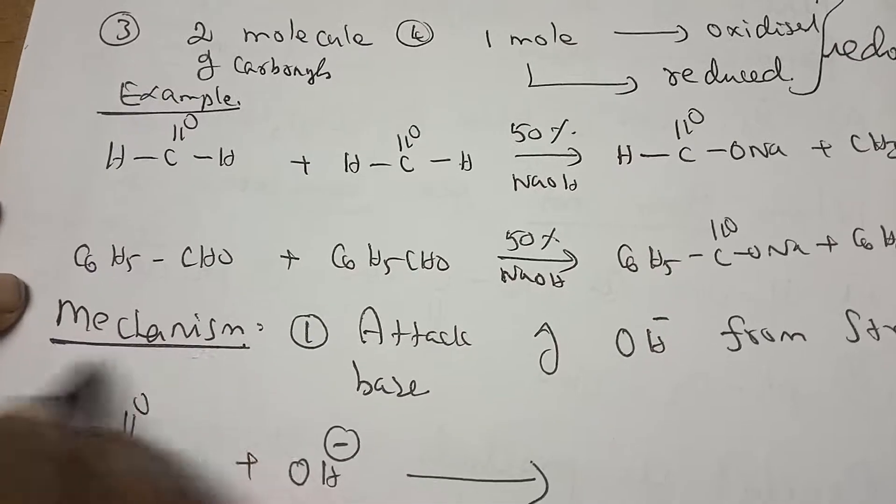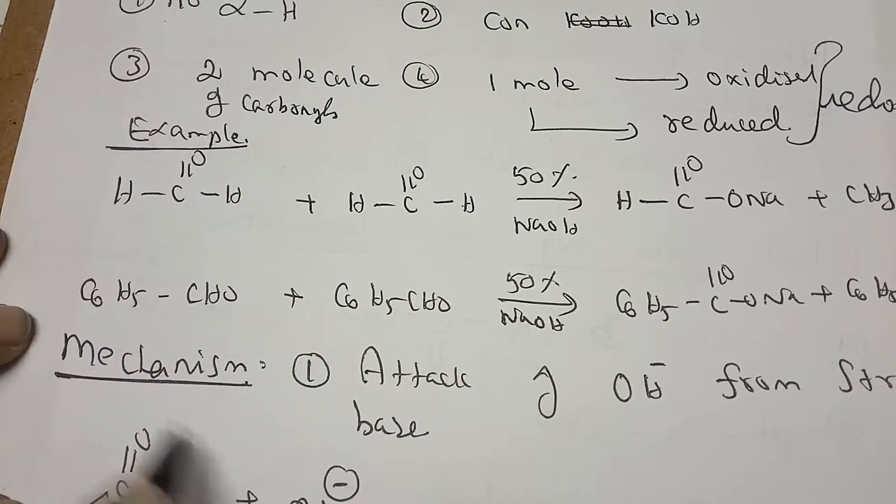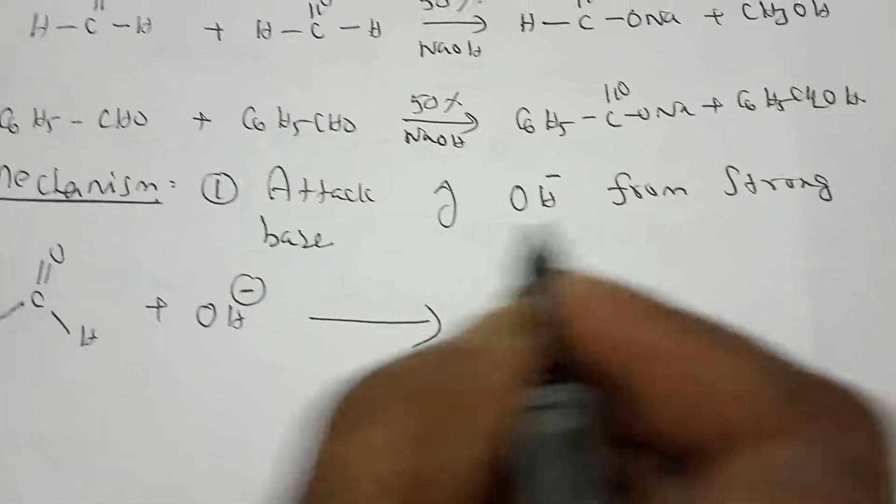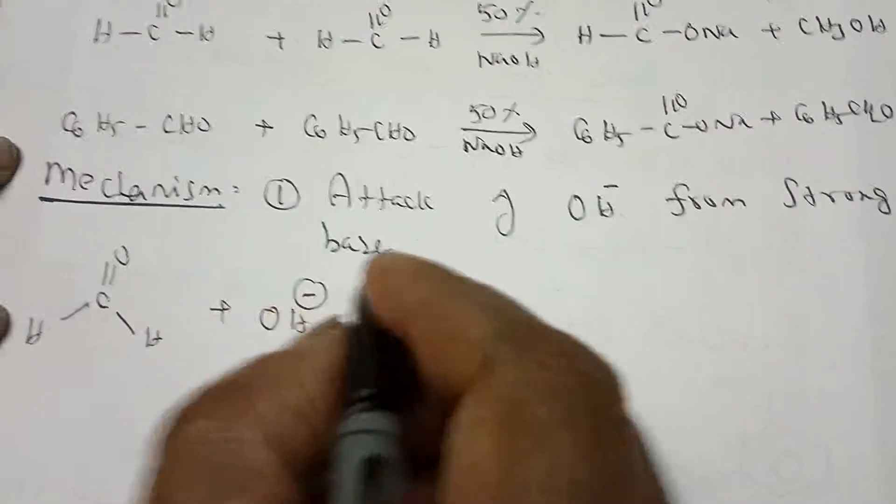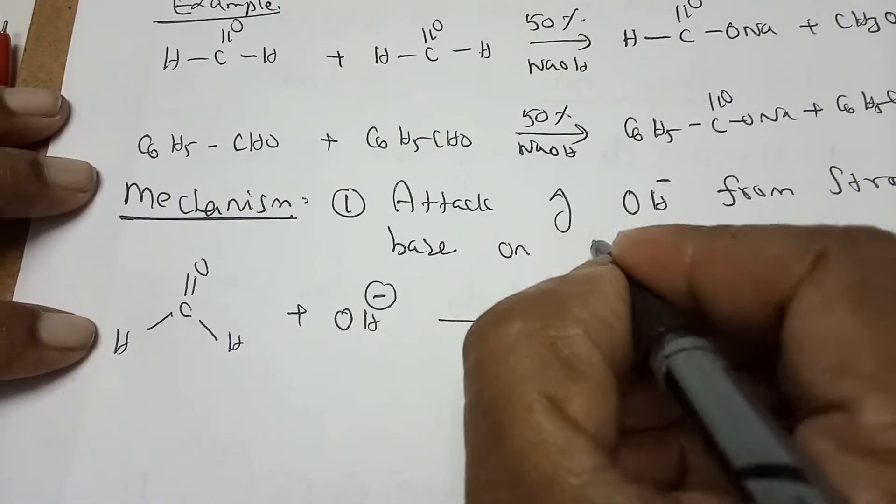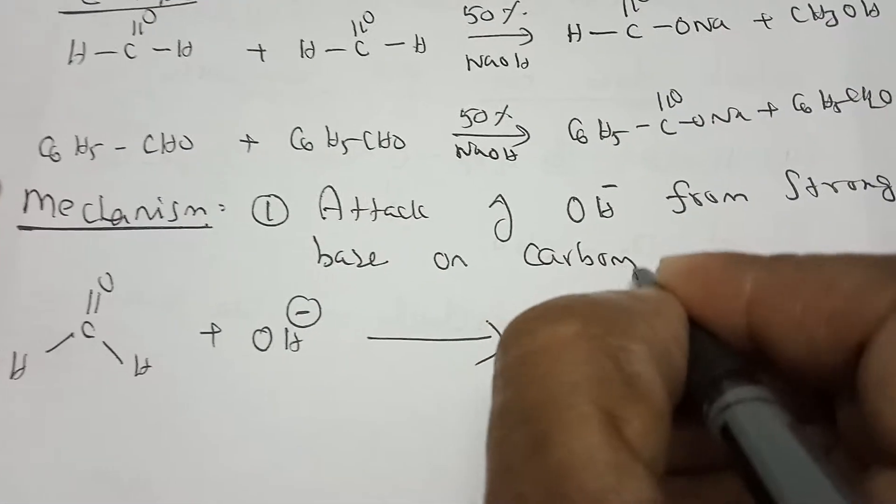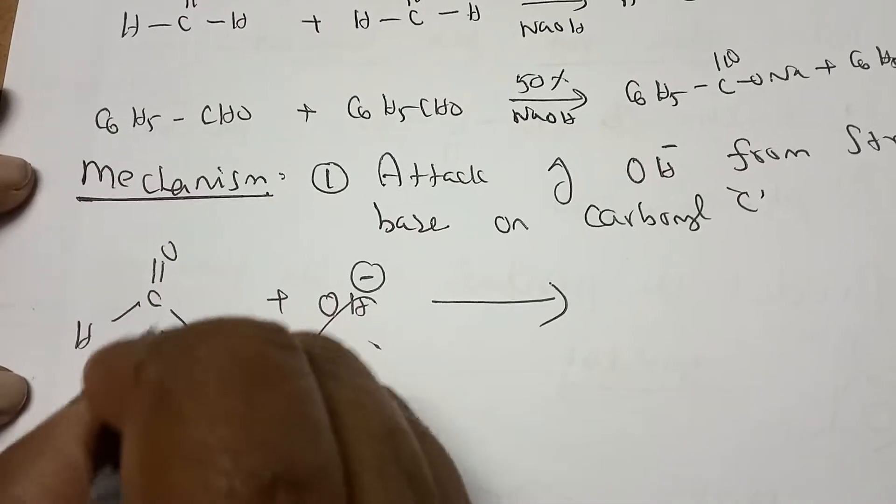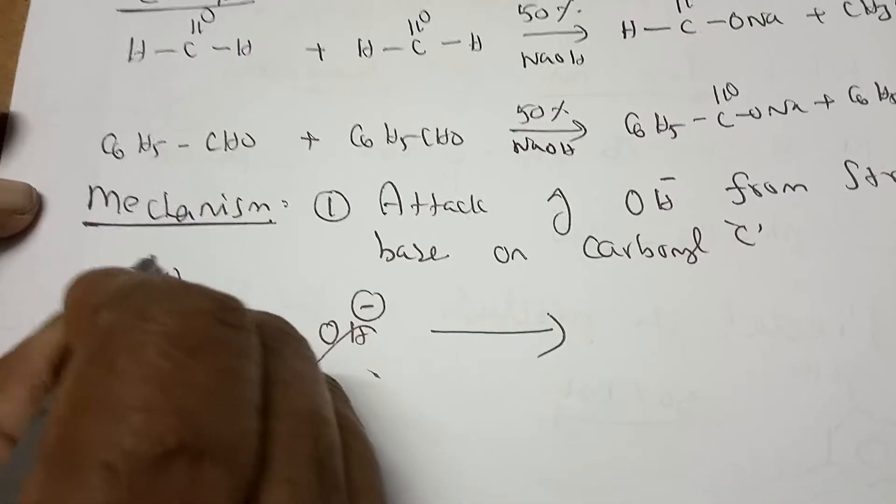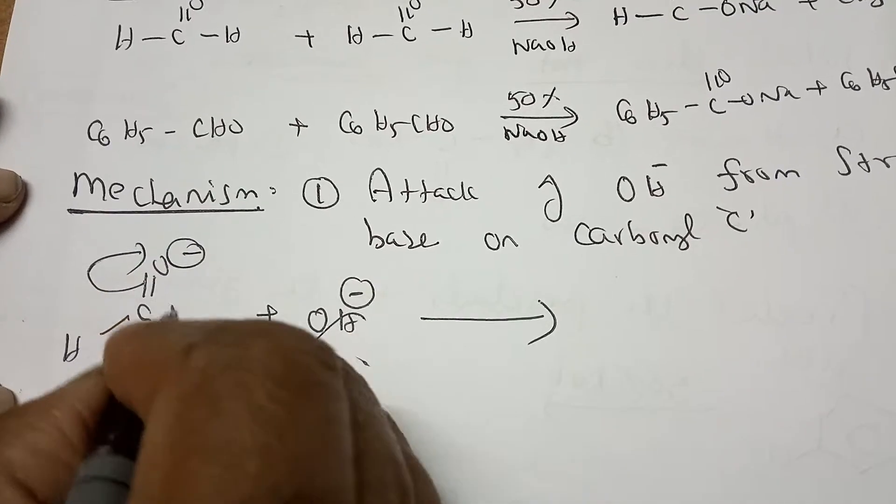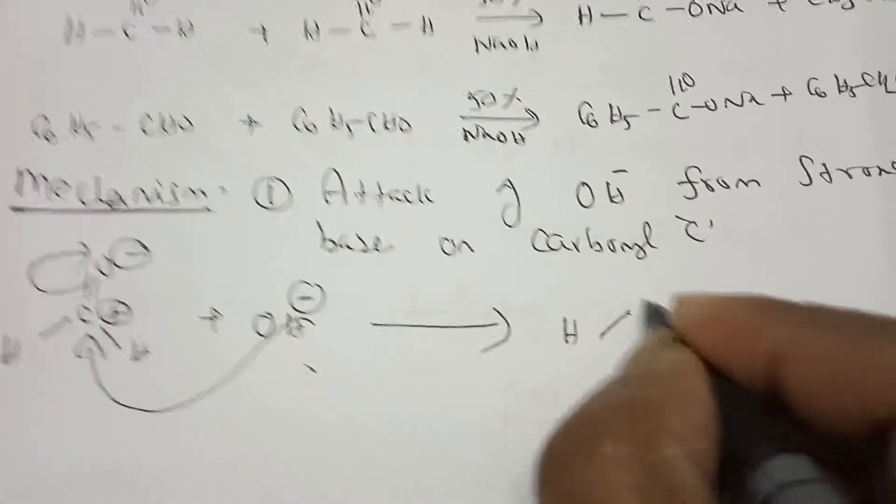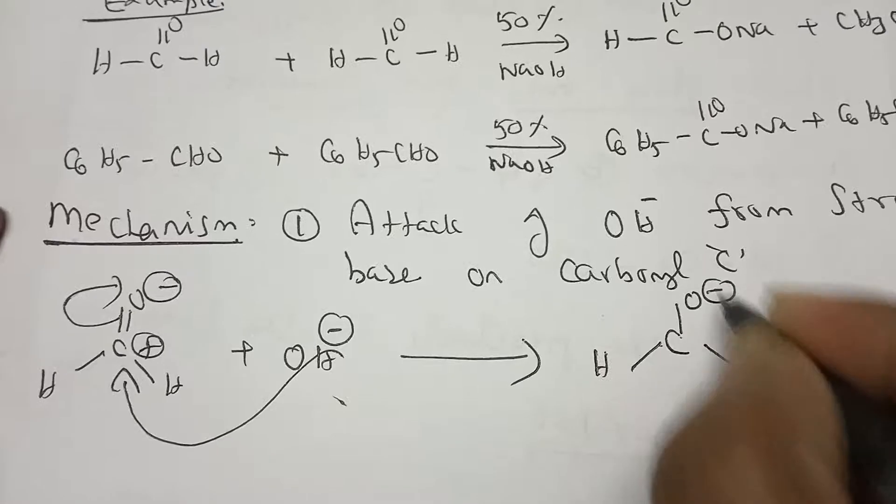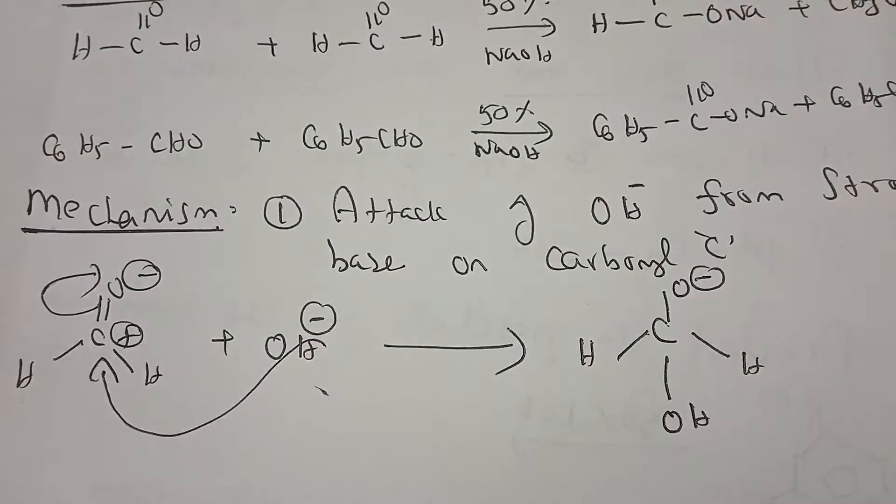Now I am going to explain the mechanism based on formaldehyde. The first step is attack of the OH- from the base, strong base, to the carbonyl carbon or on the carbonyl carbon. So this is from the strong base. It attacks the carbonyl carbon. So automatically polarization takes place and here it is plus takes place.